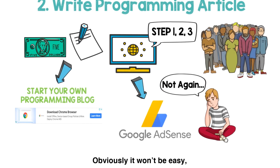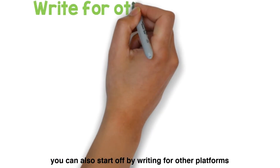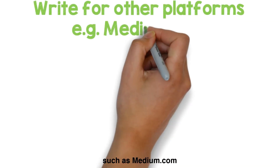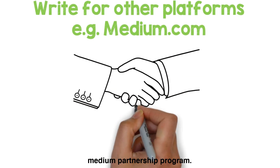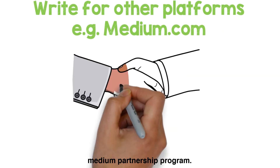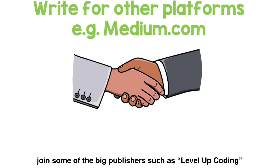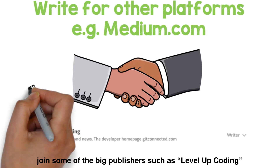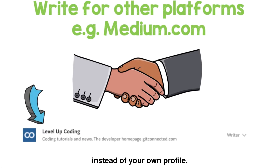Obviously, it won't be easy. So if you're not ready to commit, you can also start off by writing for other platforms such as Medium.com and monetize your articles through their Medium Partnership Program. One great tip to get more exposure to your article and your profile on Medium is to join some of the big publishers such as Level Up Coding and post your article through these publishers instead of your own profile.